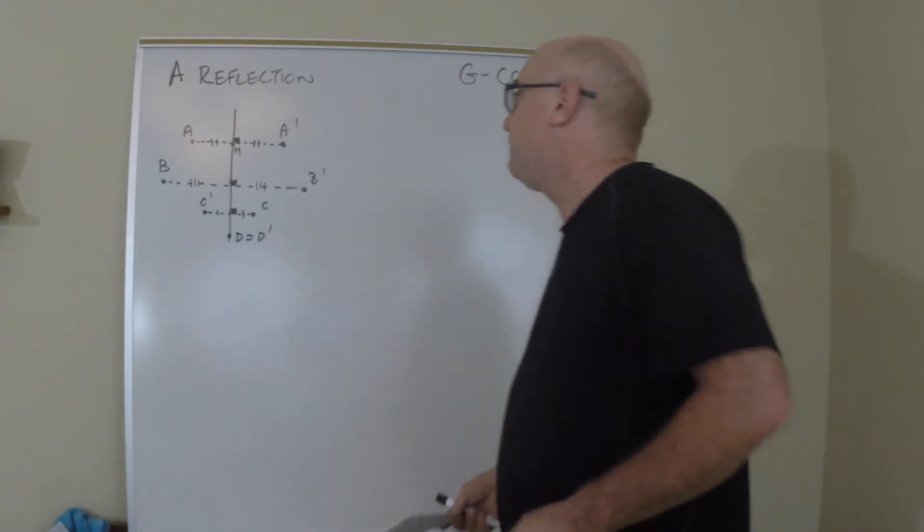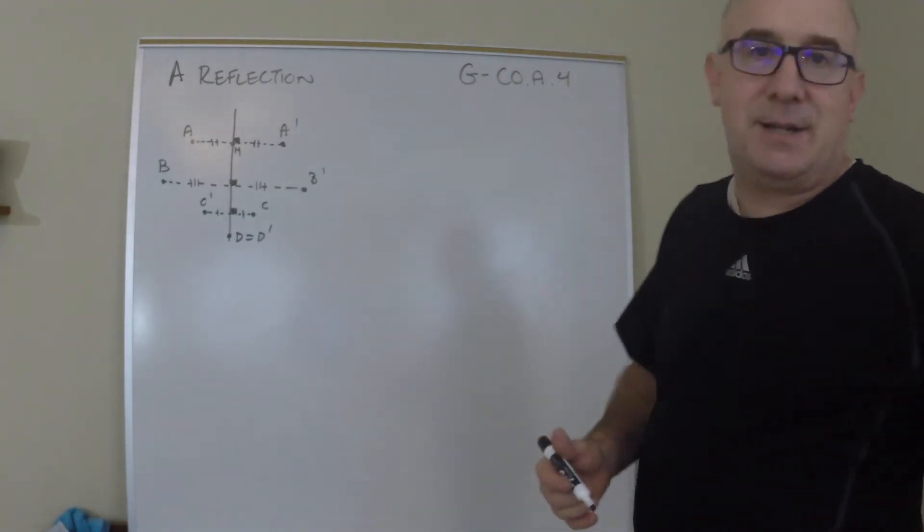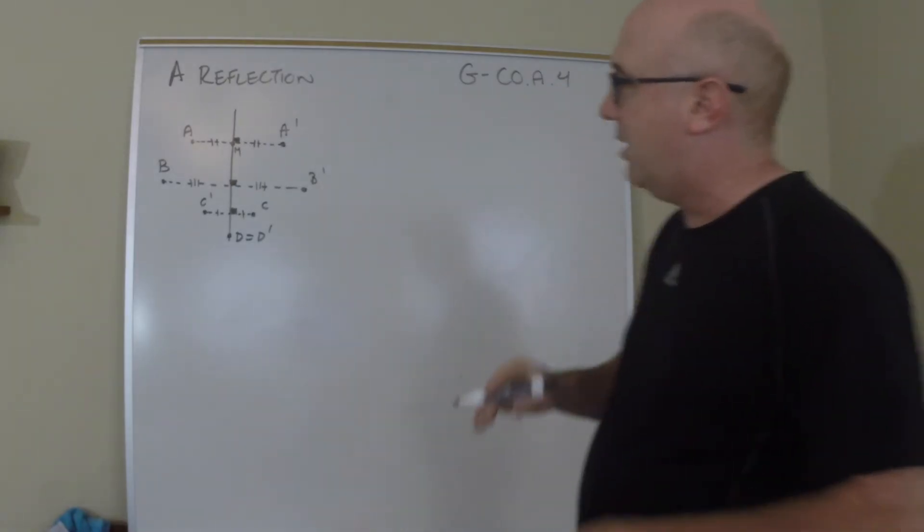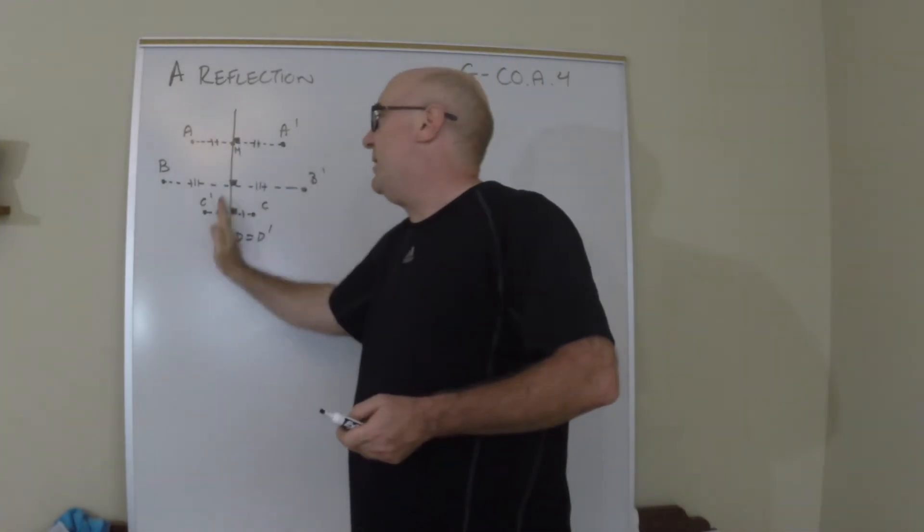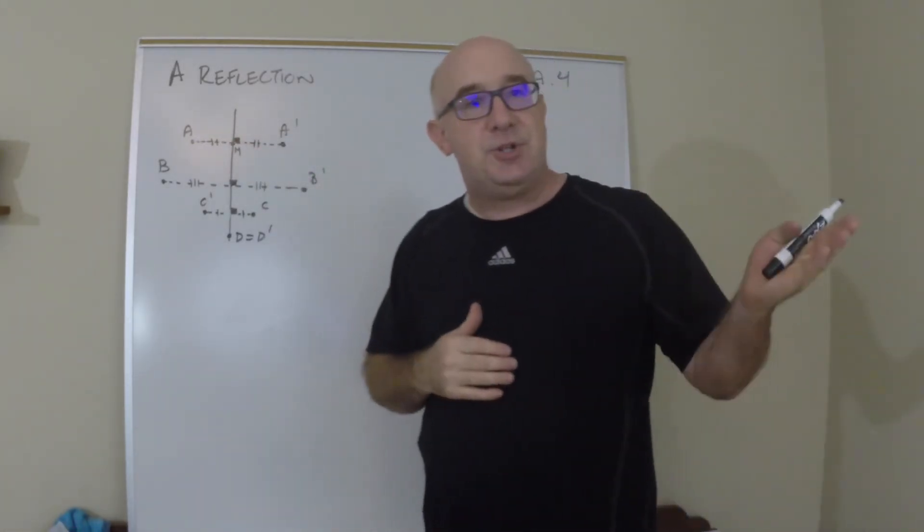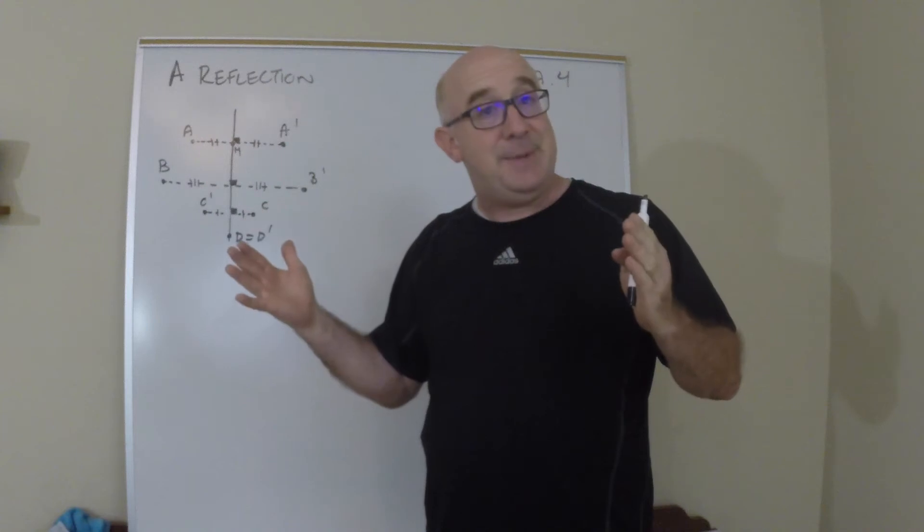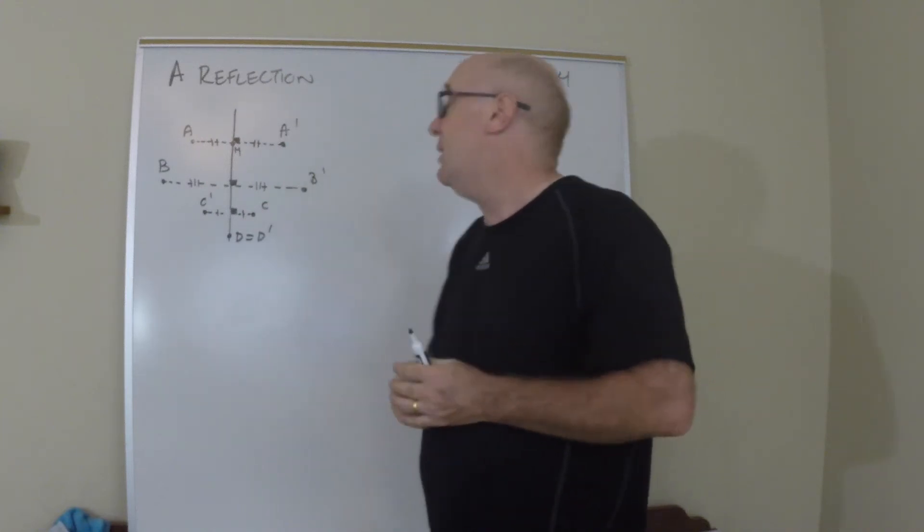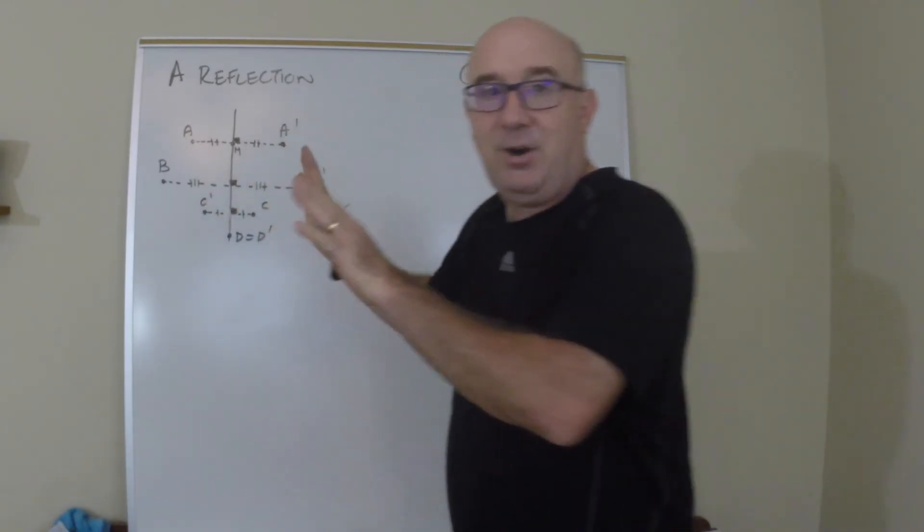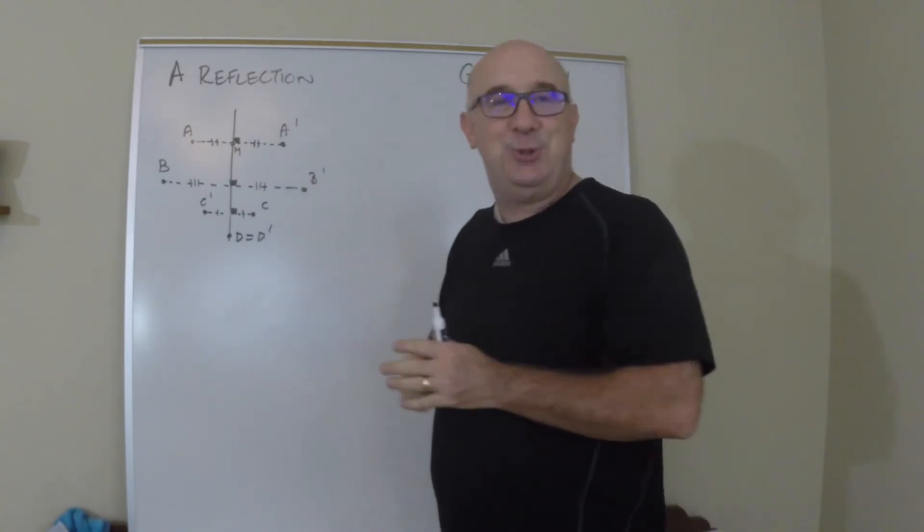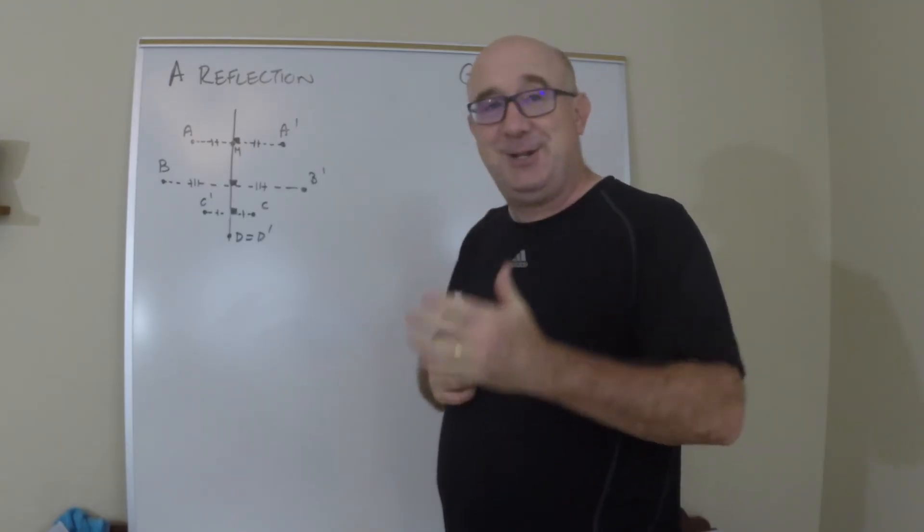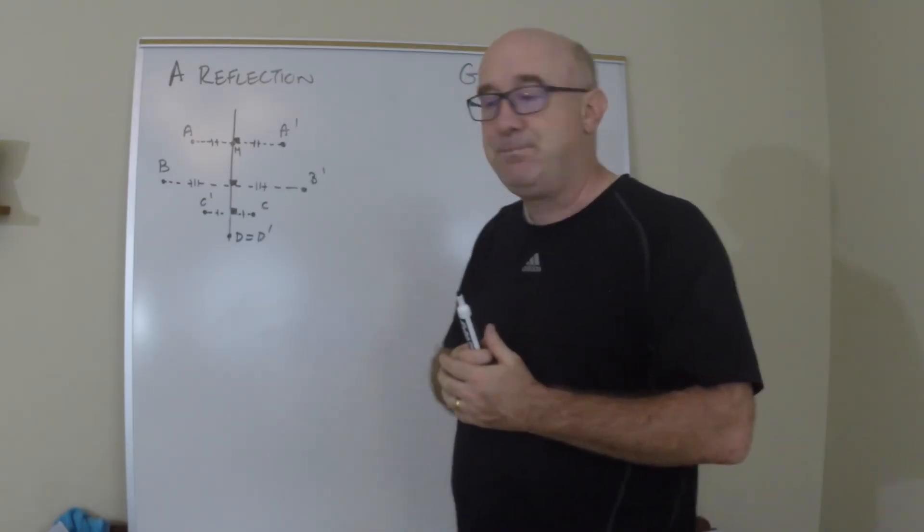Now let's look at some of the characteristics of this. First of all, there must always be a perpendicular bisector between the original, the pre-image, and its image. That's an important thing. Another important thing is all points will move parallel to each other and perpendicular to the line of reflection.